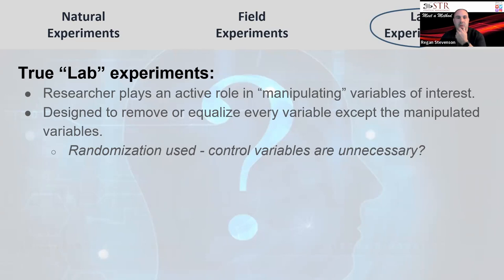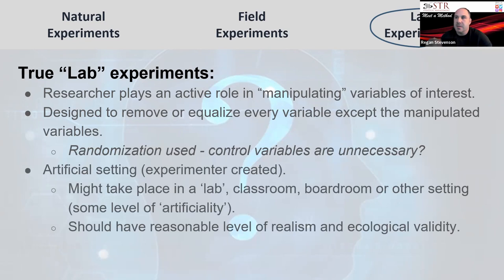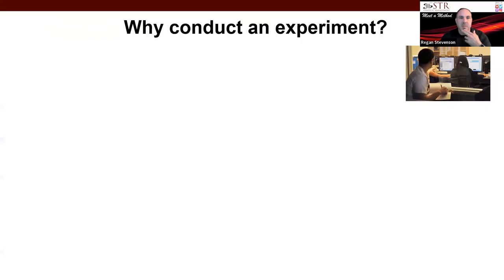One other important thing about a lab study: you have to understand that this is an artificial setting by design. You've made a choice not to go into the field or look at archival data, and as a result, there will be some level of artificiality no matter what you do. The goal for the researcher is to find some reasonable level of a realistic scenario with ecological validity — where the behaviors simulate the real world scenario. That's a little bit of an overview of what a lab experiment is and how it differs from a field study and classic observational studies.